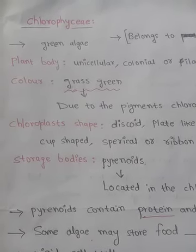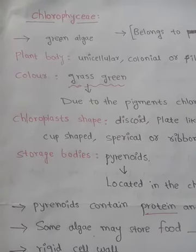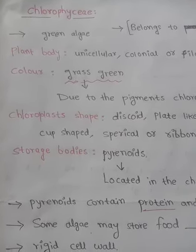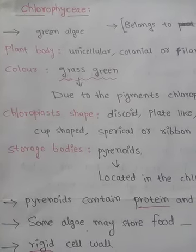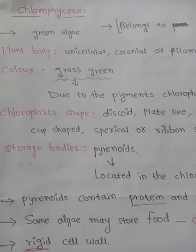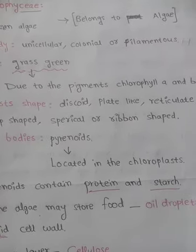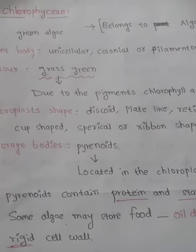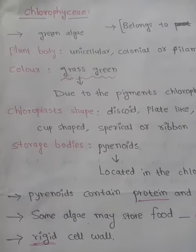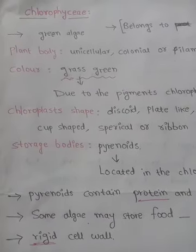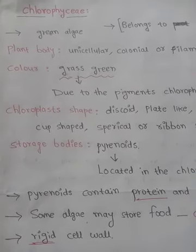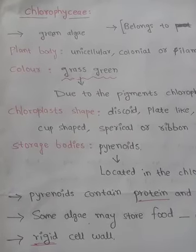Chlorophyceae class is commonly called green algae. Why? Because in the Chlorophyceae members they have the pigments chlorophyll A and chlorophyll B. Due to the pigments chlorophyll A and chlorophyll B, they appear grass green in color. So they are called green algae.